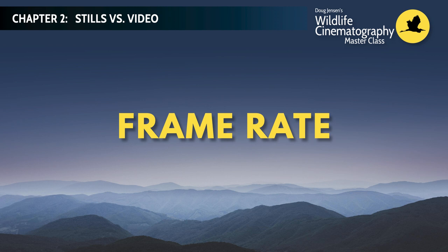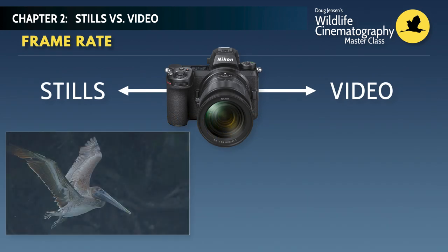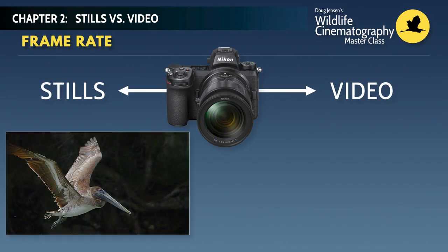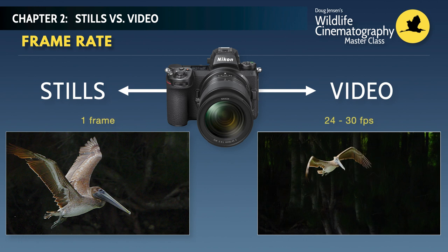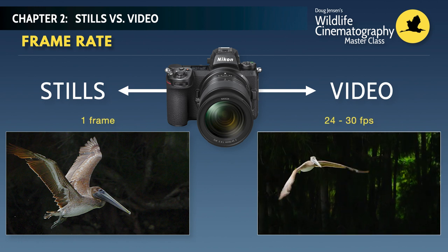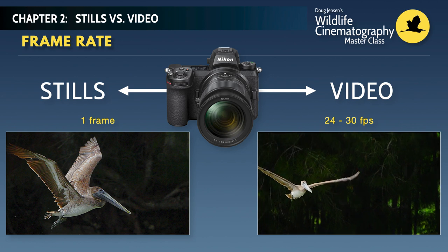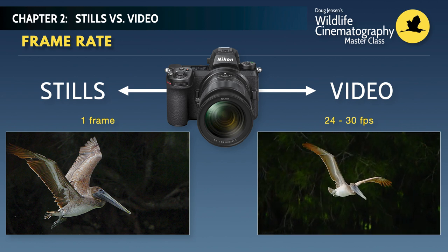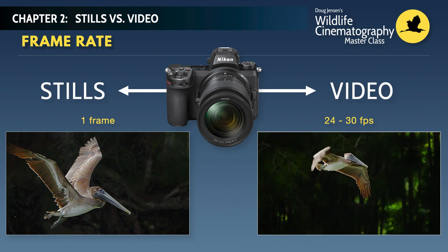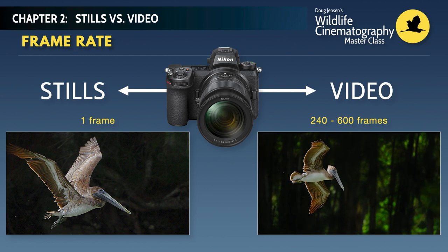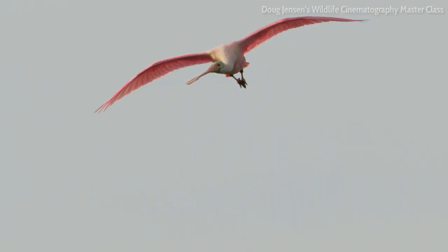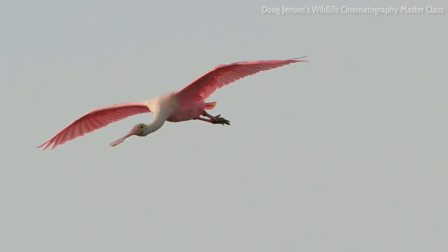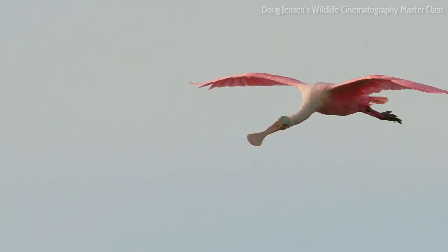Another significant difference between photos and video is how many frames you must capture in order to have a usable final product. For photos, just one single frame is all you need to hang on the wall or post on social media. But for video, a single frozen moment in time won't cut it. We need to capture between 24 and 30 frames per second, all with perfect exposure, sharp focus, and pleasing composition, or we've got nothing at all. When you consider that video clips generally need a running time of at least 10 to 20 seconds to be of any use, that means we need to capture anywhere from 240 to 600 perfect images in a row. 10 seconds of tracking a bird in flight with perfect exposure and focus can seem like an eternity when you're a beginner.